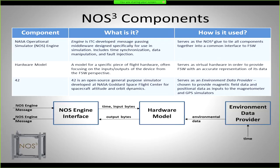Engine is middleware for passing messages around — we use it on our simulators. In NOS Cubed, it serves as the glue to tie all the components together. The next component is a hardware model — specific hardware models: specific GPS, specific power system, maybe a particular gyro. You're going to have a hardware model of that, which you probably wrote yourself.